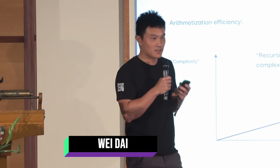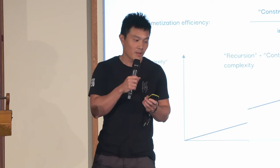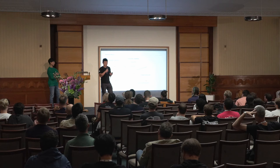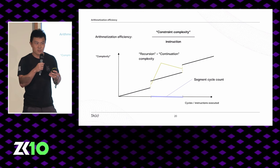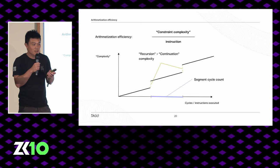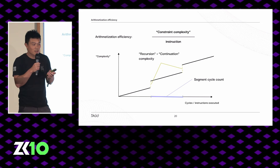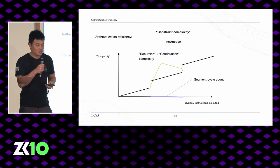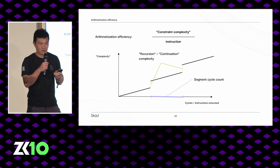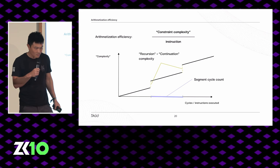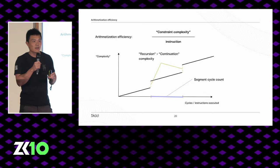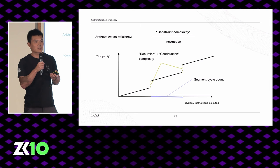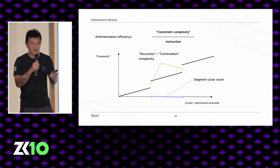Most existing implementations use segmentation for two reasons: first, there's economy of scale for proving — memory usage is linear in instance size and proving time is super-linear — so it's more efficient to keep segments smaller. Second, segments can be proved in parallel, lowering latency with many machines. However, segmentation is not free: we incur overheads proving machine state consistency between segments, and need recursion to compress all proofs to a single proof. For Stark VMs, segment cycle counts are typically around one million cycles; for Nova-based systems, it could be as low as one single instruction.